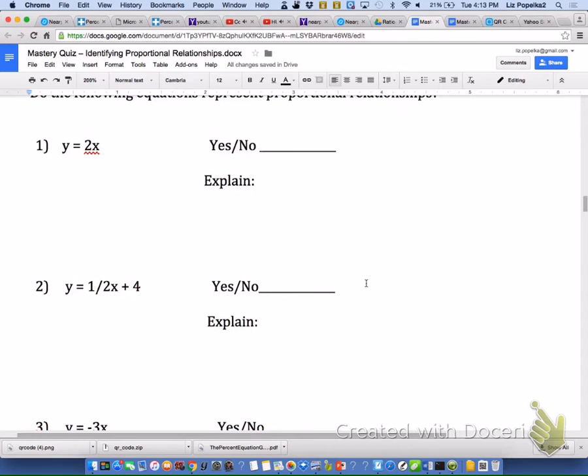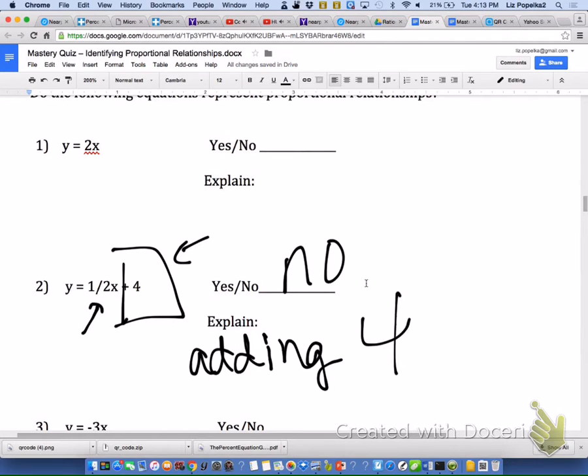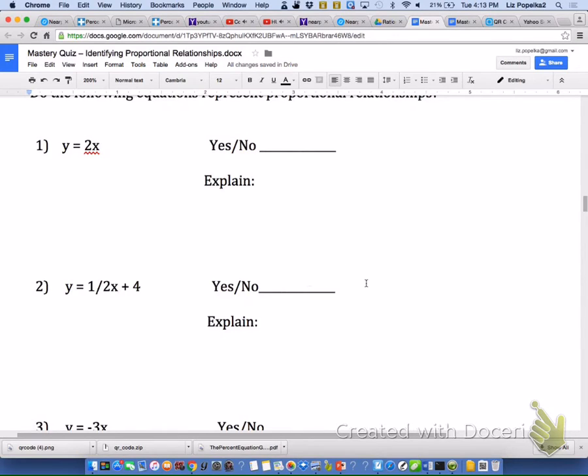Number two, we can tell this equation has 1/2x plus 4. What's going on is that we're scaling the x down, dividing it by 2, and then we are adding 4 to it. So that is going to be a no because you are adding 4. There is no adding or subtracting when we are dealing with proportional relationships.